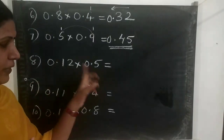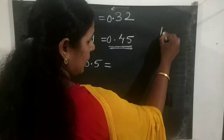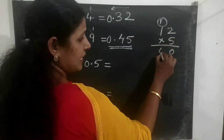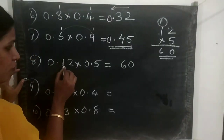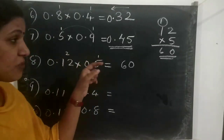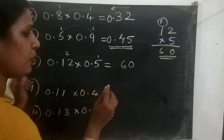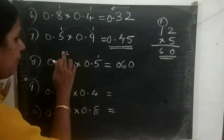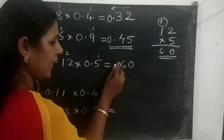Next is 0.12 into 0.5. First multiply 12 into 5: 5 twos are 10, carry 1; 5 ones plus 1 is 6. So we get 60. Then count the places — after the decimal in 0.12 there are 2 places, and in 0.5 there is 1 place. Total: 2 plus 1 equals 3 places. But 60 only has 2 digits, so we need a third place — put a 0 in front. Count 1, 2, 3 from right to left and put the point. The answer is 0.060.